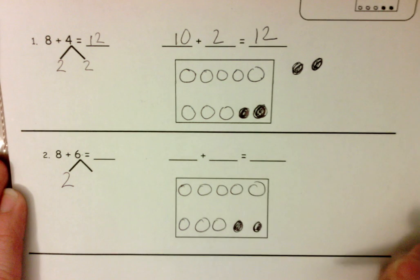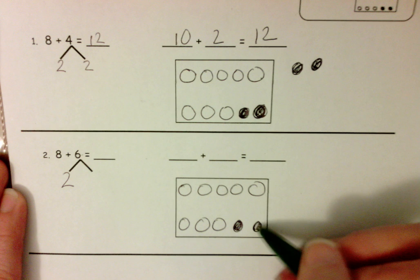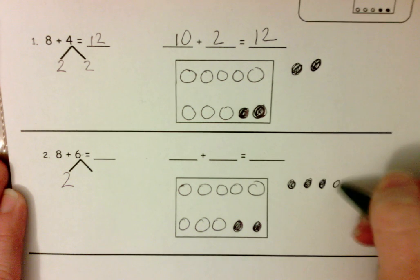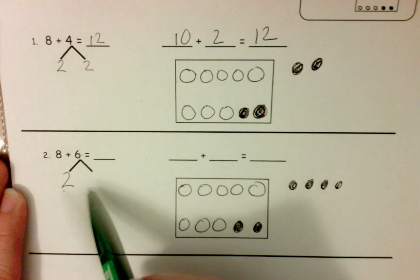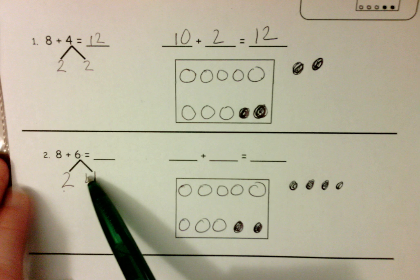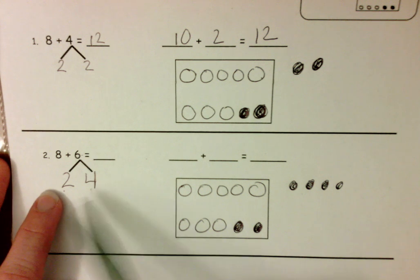And then seeing what they'd have left. Okay, we have 2, 3, 4, 5, 6. So what's 6 made of? 2 and 4.